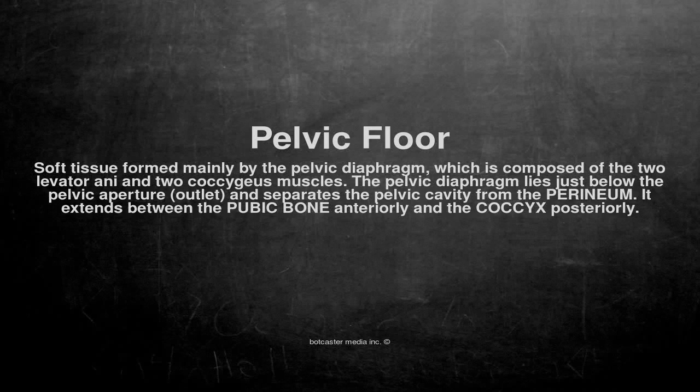Pelvic Floor. Soft tissue formed mainly by the pelvic diaphragm, which is composed of the two levator ani and two coccygeus muscles. The pelvic diaphragm lies just below the pelvic aperture outlet, and separates the pelvic cavity from the perineum. It extends between the pubic bone anteriorly and the coccyx posteriorly.